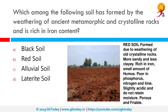Which among the following soils has been formed by the weathering of ancient metamorphic and crystalline rocks and is rich in iron content? The correct answer is red soil, which is formed by the weathering of ancient crystalline and metamorphic rocks — particularly acid granites, quartzitic rocks, and felsic rocks. Chemically, red soil is siliceous and aluminous with free quartzous sand, but is rich in potassium, ranging from sandy to clay with the majority being loamy.